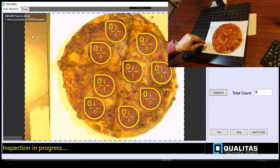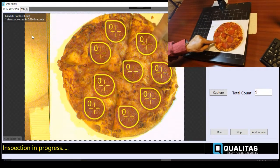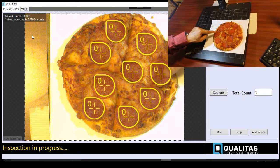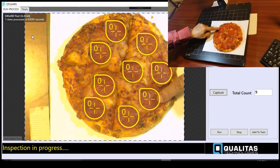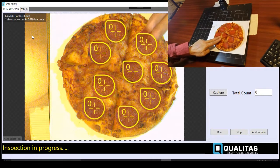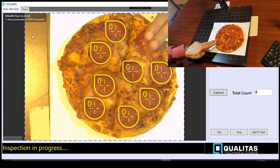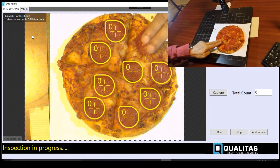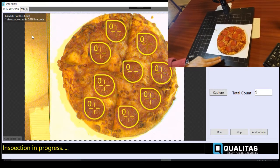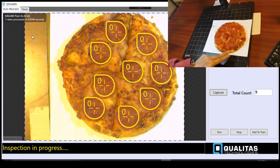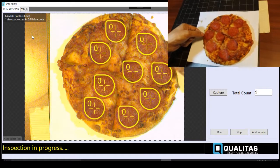So as you can see in this demonstration, you have the images that are being processed in real time. So as I move my finger over the pepperoni slices, it automatically updates the counts and removes the detector, the pepperoni detector, as in when I cover a slice.